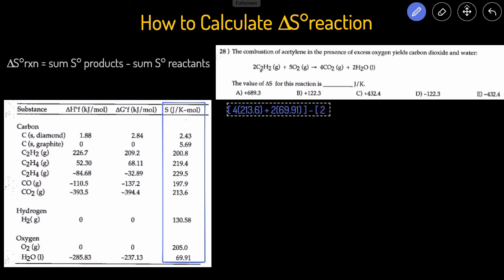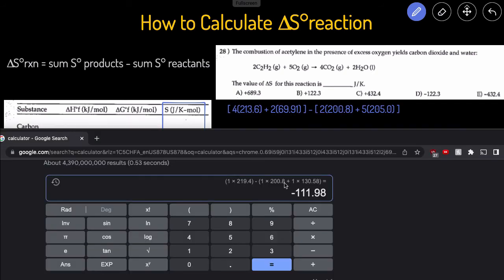2 times the value of C2H2, which is 200.8, plus 5 times the value of O2, which is 205.0. So now let's pull up the Google calculator and enter that in and see what we get.